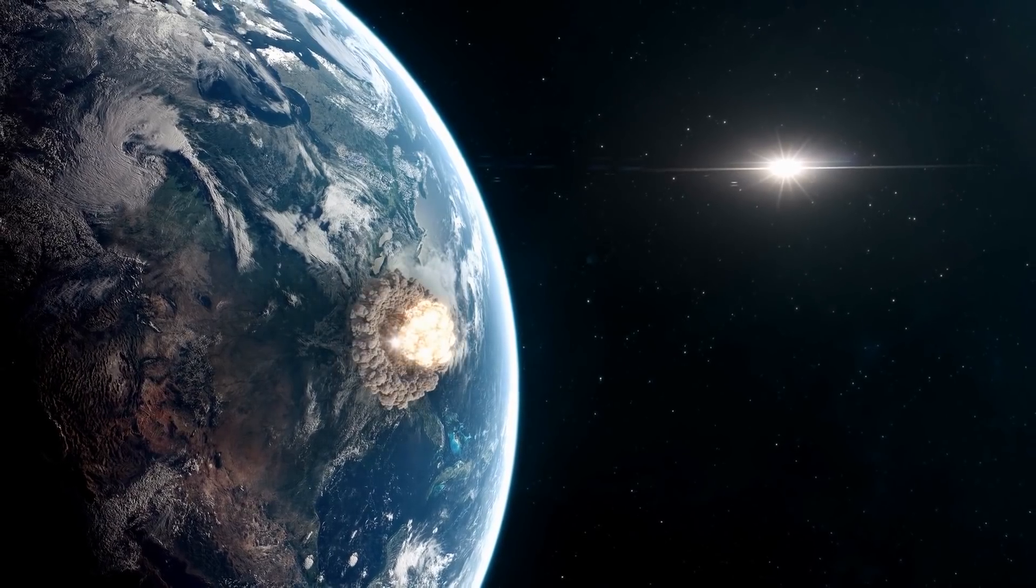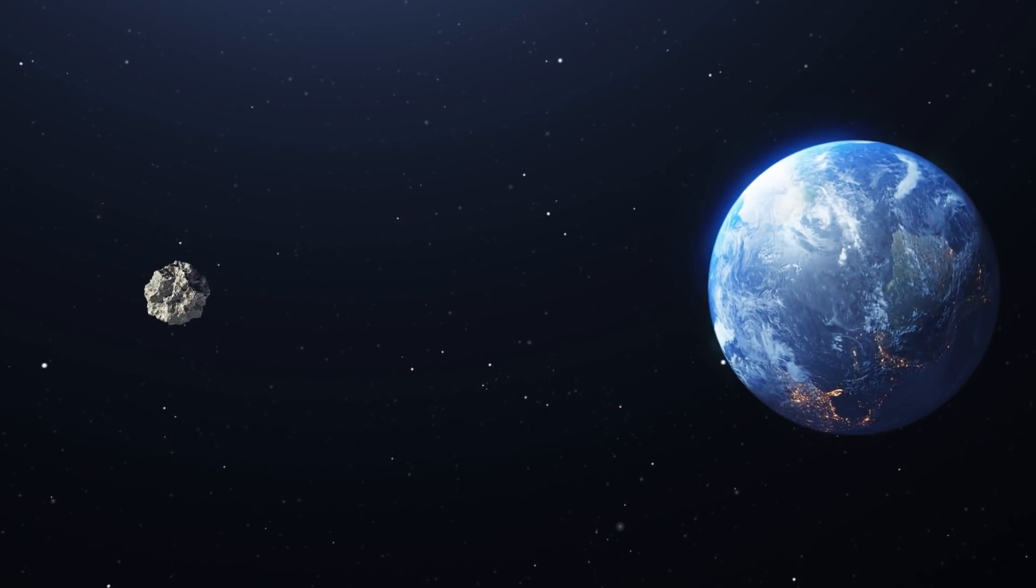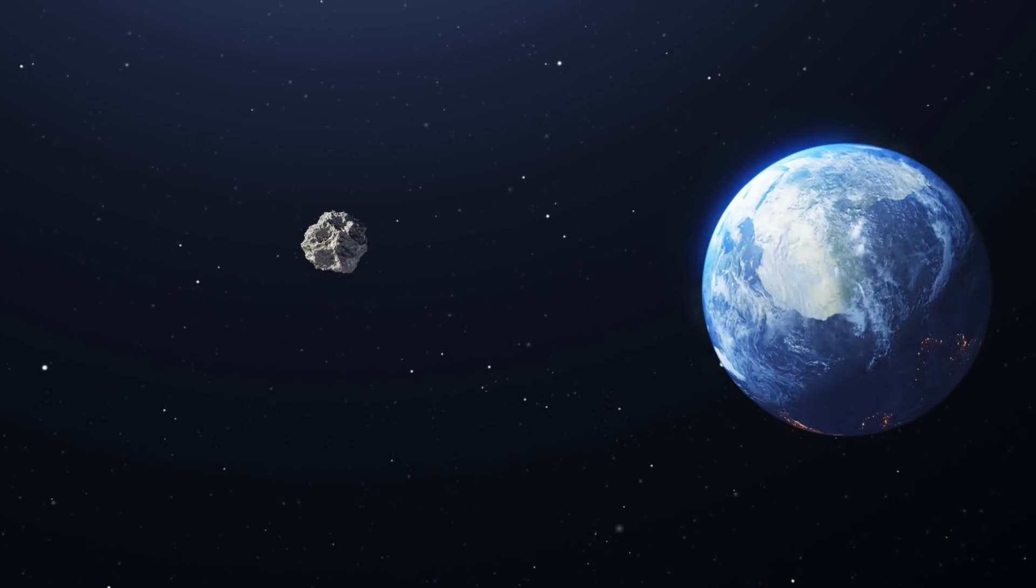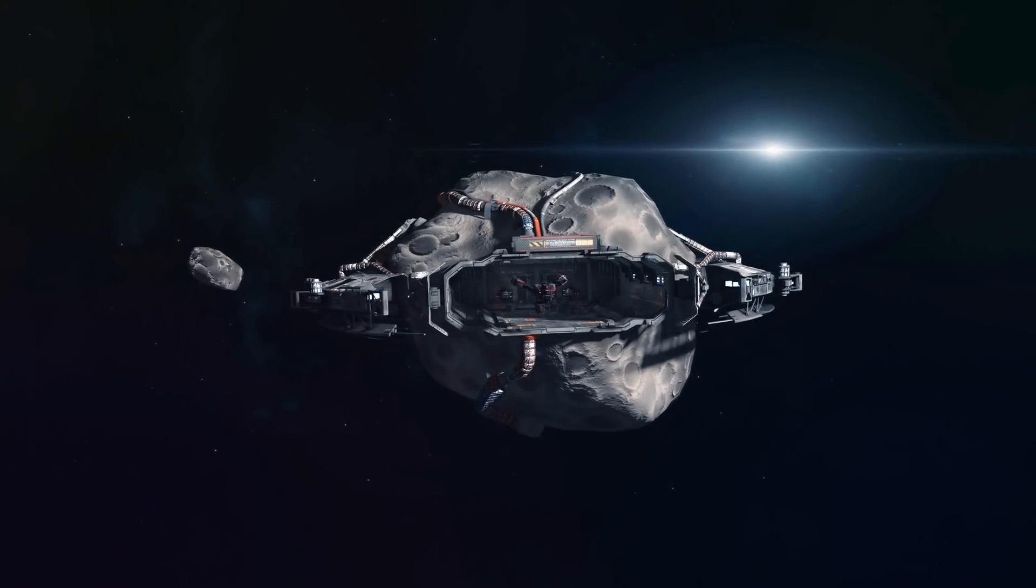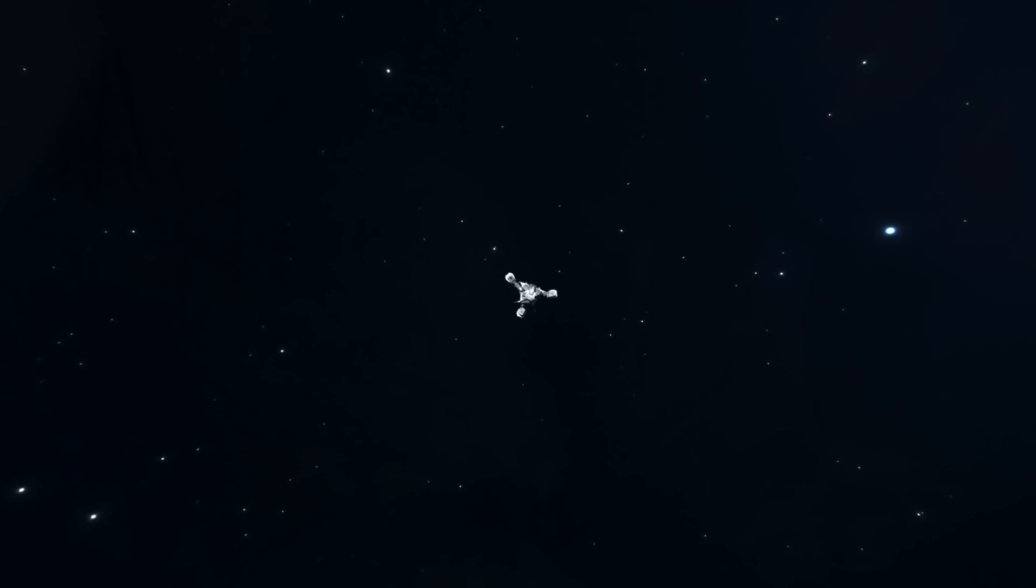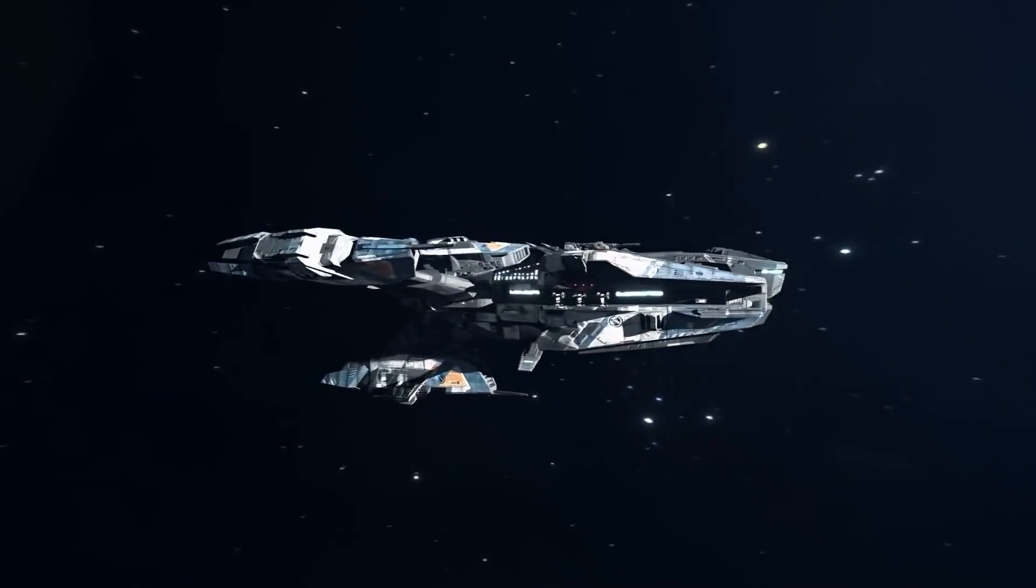They found out about the object's course, odds of hitting our planet, and its size. But they couldn't come up with a working solution to deflect it. Turns out, we haven't yet invented spacecraft that could eliminate such a threat within six months. In fact, such a mission would take us five to ten years.